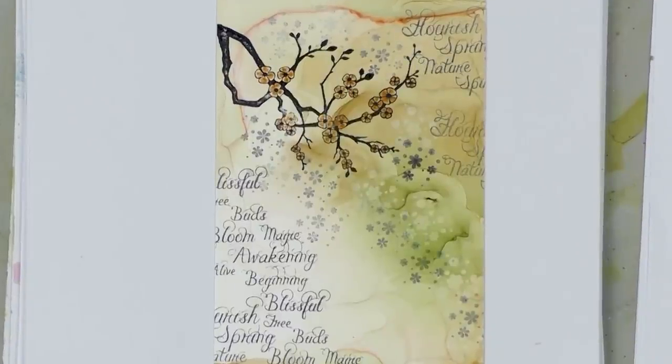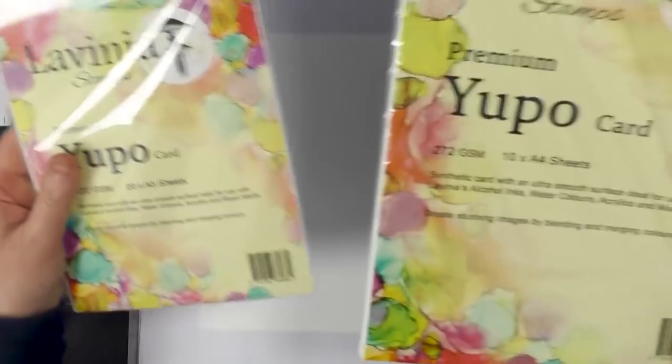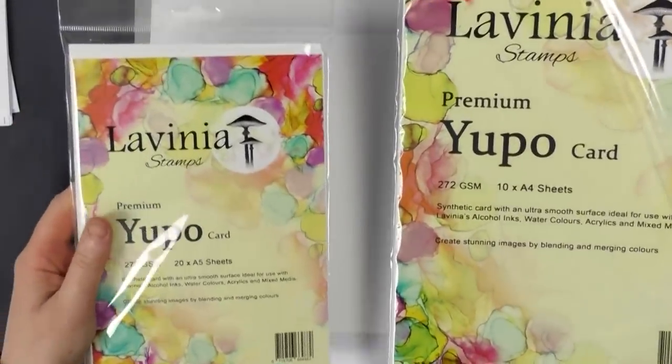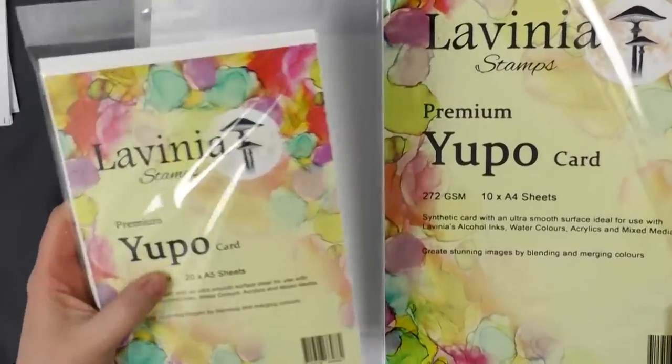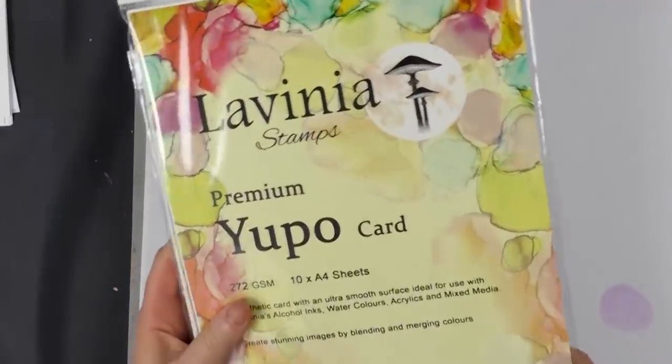Hi there, this is Tracy from Lavinia Stamps and today we're going to be using some of our Yuppo card. We've got two sizes here that we're selling, this is the A4 and the A5, there's 20 cards in the A5, 10 in the A4.